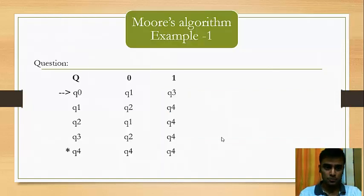This is our first example. Here, Q as we can see is the state, 0 and 1 are the input symbols. This arrow mark here is the initial state and star denotes the final state. Under Q, we have Q0, Q1, Q2, Q3 and Q4 which are the different states. Now, we will solve this example using Moore's algorithm.